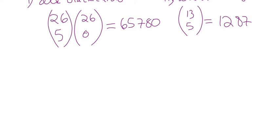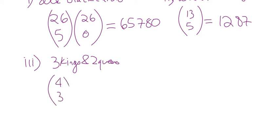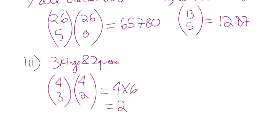Three kings and two queens: there are four kings, I want three — that's 4C3 = 4. There are four queens, I want two — that's 4C2 = 6. Multiply them: 4 × 6 = 24.